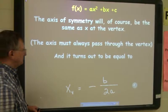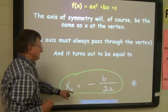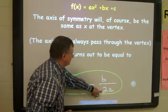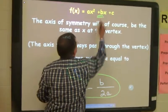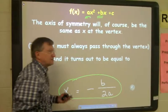And it turns out to be equal to this: x at the vertex is negative b over 2a. Negative b over 2a every time.